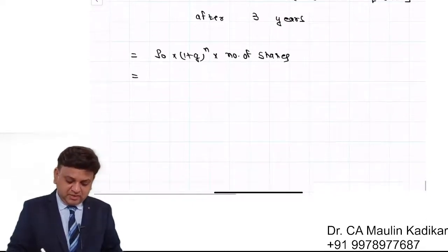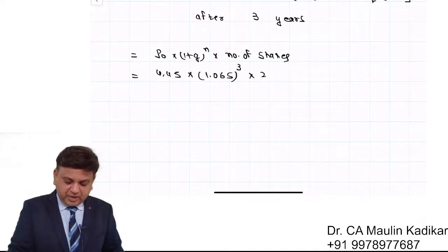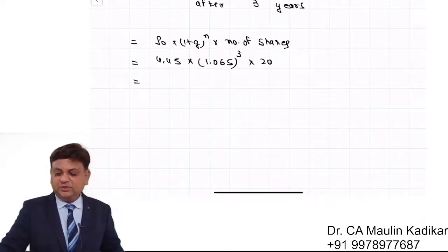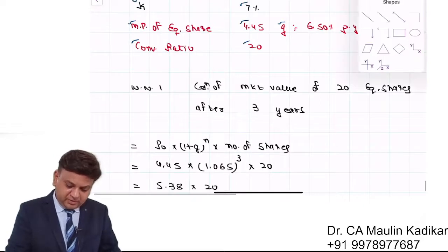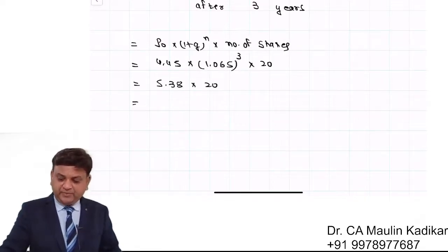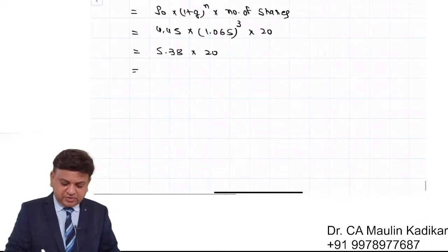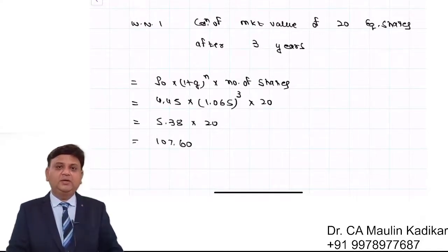Today's price P0 is £4.45. There is a growth rate of 6.5% for 3 years, and the number of equity shares on conversion is 20. So: 4.45 × (1.065)^3 × 20. That gives us a share price of approximately £5.38 after 3 years. And 5.38 × 20 = £107.6. So the market value of 20 equity shares after 3 years will be £107.6.